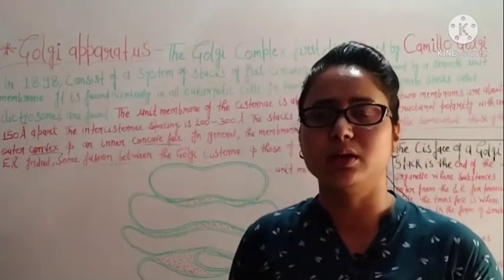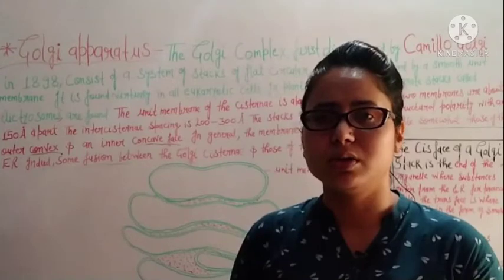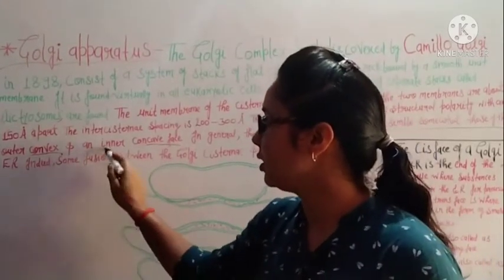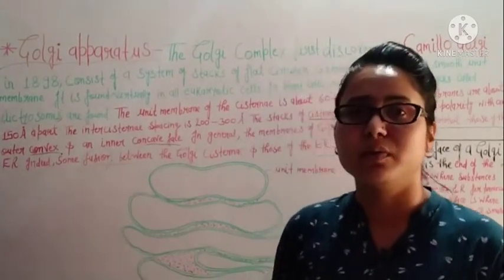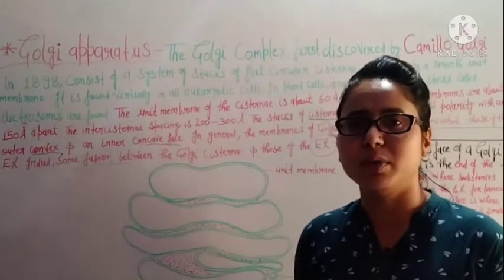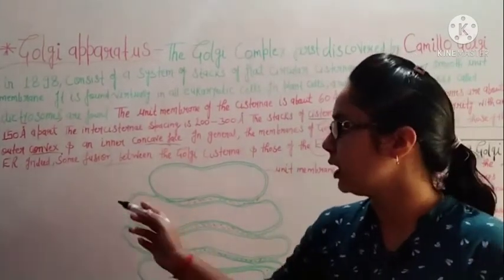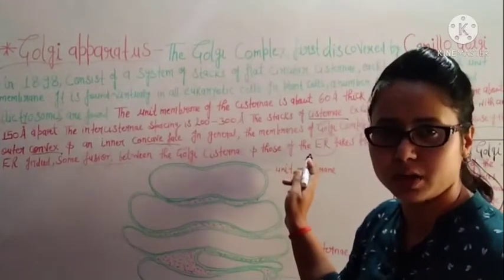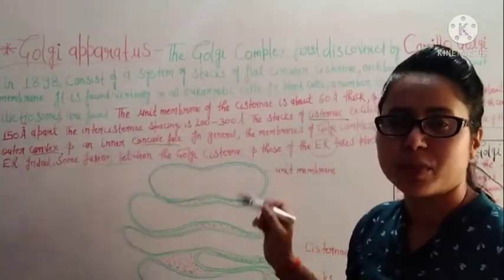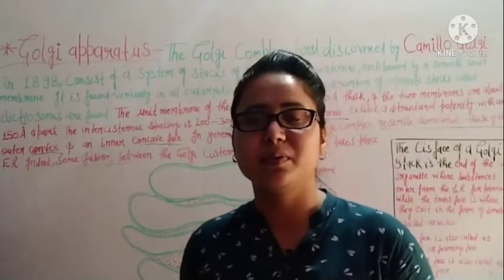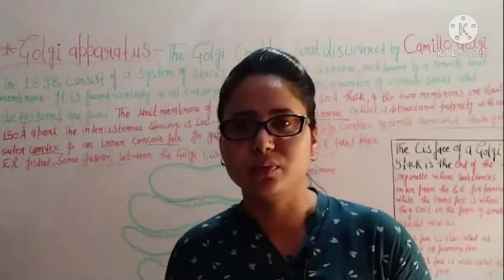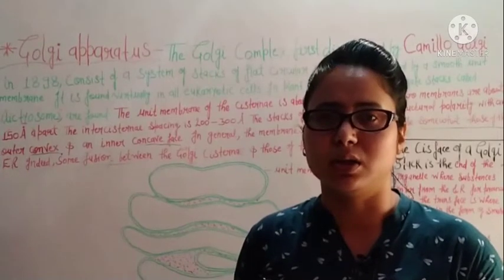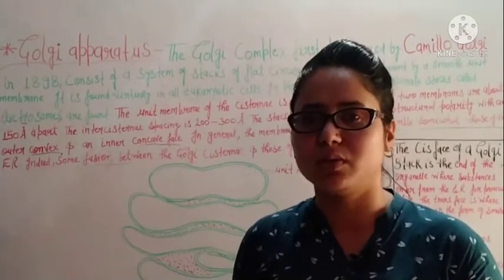You should also know two terms: fusion and fission. Fusion means combining or merging things together — as seen here where Golgi cisternae fuse with the endoplasmic reticulum. Fission means to separate and become divided. Don't be confused between fusion and fission.